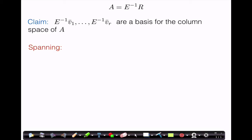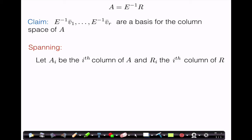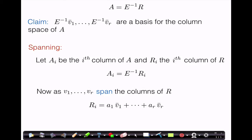Now let us prove this claim. Since we want to show that something is a basis, we need to show two things: that these vectors span the column space of A, and that they're linearly independent. Let's start with the spanning condition. Call Ai the ith column of A, and Ri the ith column of R. We know that V1 through Vr are a basis for the column space of R, so V1 through Vr span the column space of R. That means any column of R, say Ri, can be written as a linear combination of V1 through Vr.